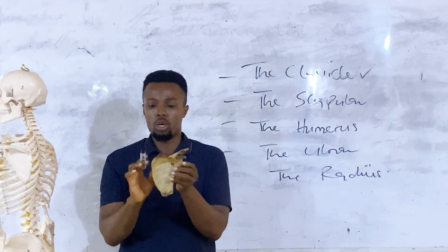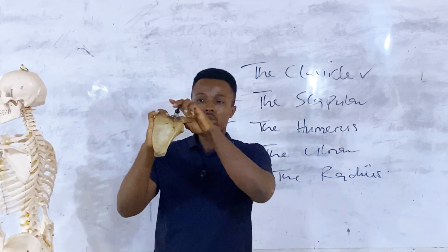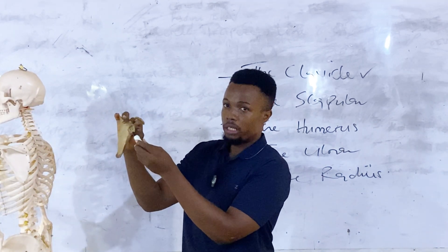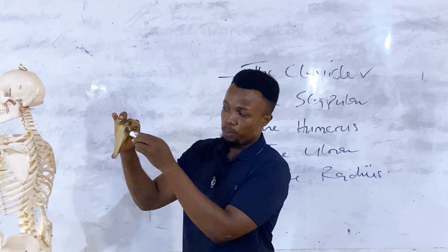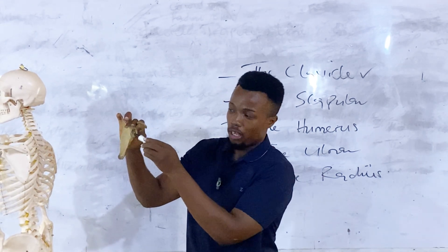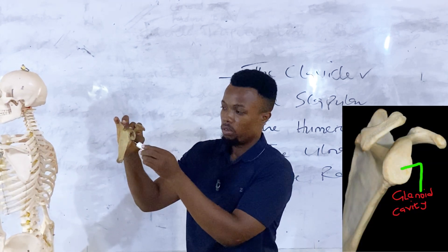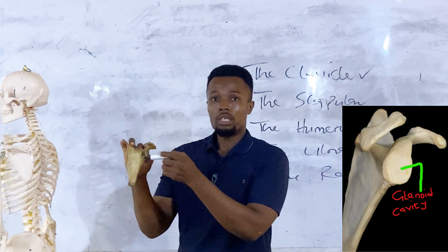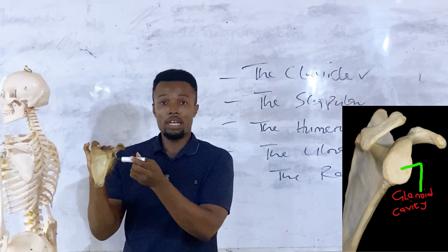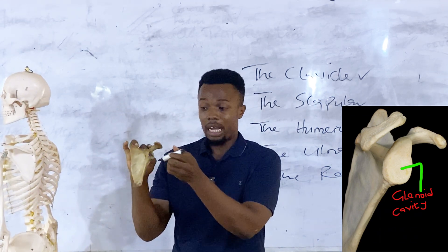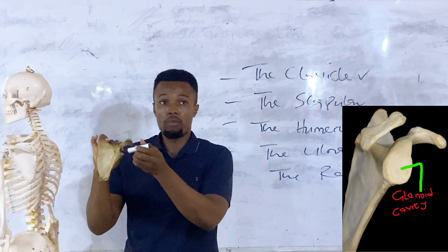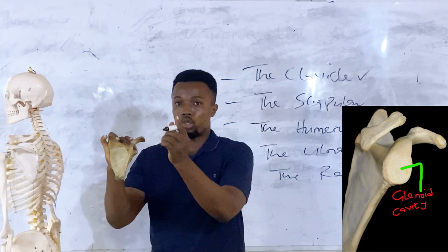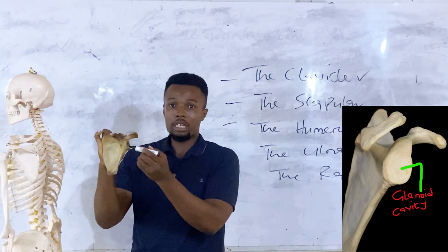We've come to this particular feature here. You can see this depression — this depression is referred to as the glenoid cavity. This is one of the articular surfaces of the shoulder joint. It is at this place that the head of the humerus articulates, and they join together to form the shoulder joint.